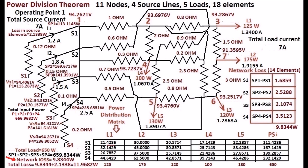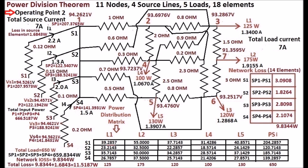Network loss and total loss are also calculated and displayed. This is the first operating point of the network. Note that after solving the equation, the total load currents are equal to the total source current of 7 ampere.